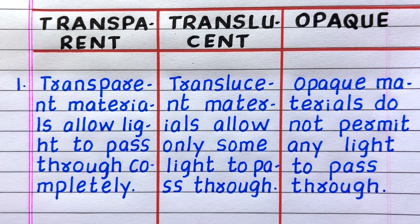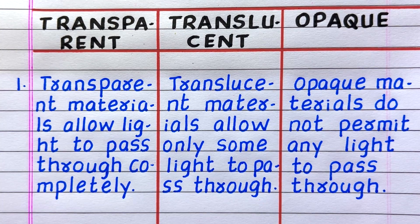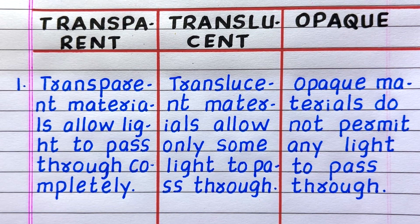Transparent materials allow light to pass through completely. Whereas, translucent materials allow only some light to pass through, while opaque materials do not permit any light to pass through.